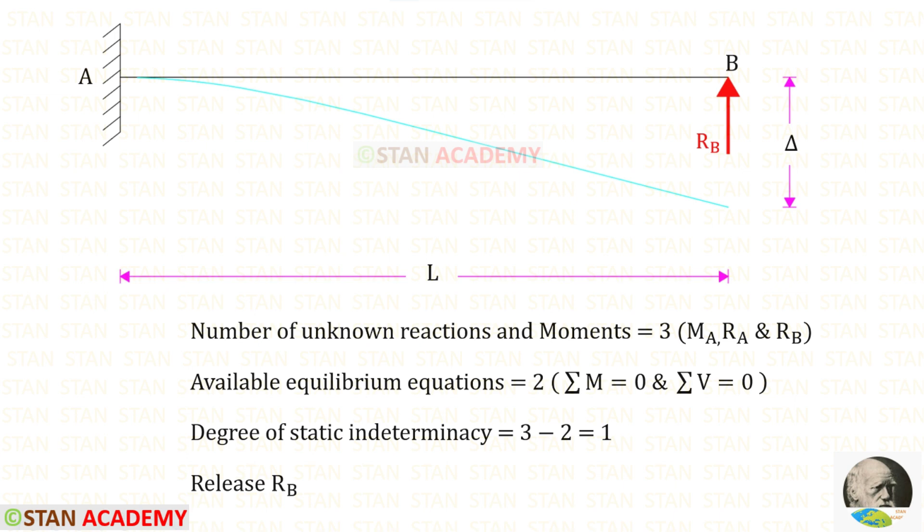Now let us find the degree of static indeterminacy. In this beam the number of unknown reactions and moments are 3. The available equilibrium equations are 2. The degree of static indeterminacy is 3 minus 2, which equals 1.